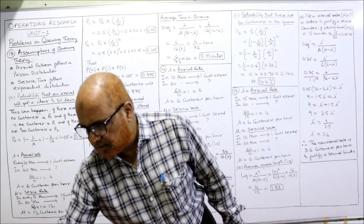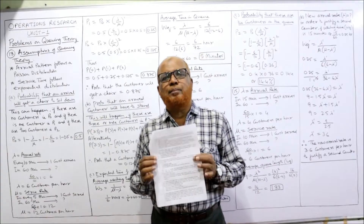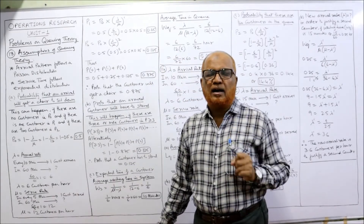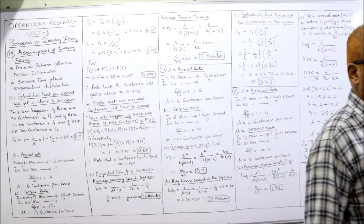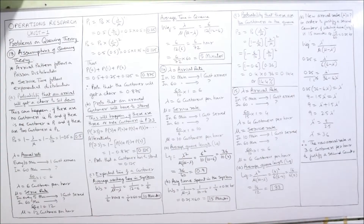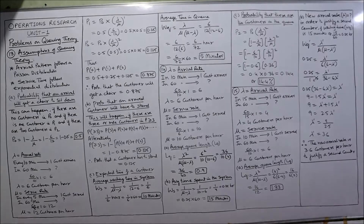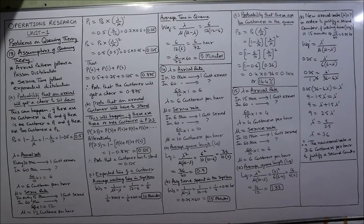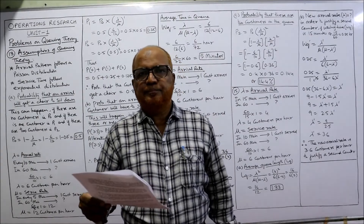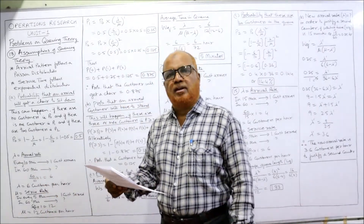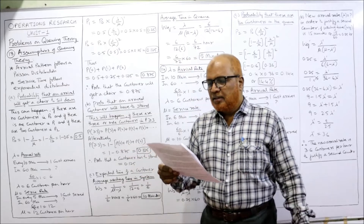Before starting the 13th problem, I expect my viewers to have a printout of the problems given in the link under the description. Problem 13: in a bank with a single server — single channel — there are two chairs for waiting customers.